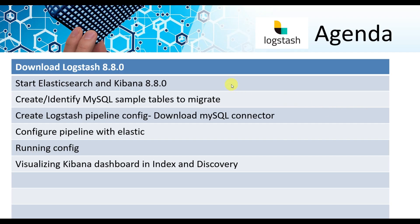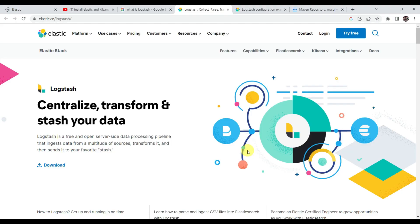The agenda of today's session: we will see how to download and install Logstash 8.8.0, then we will start Elasticsearch and Kibana, then we will create MySQL sample tables to demonstrate the migration. We will create a Logstash pipeline configuration along with MySQL connectors, configure that pipeline into the Elasticsearch setup, run the config, and visualize the data in the Elasticsearch Kibana dashboard using the Discovery tab.